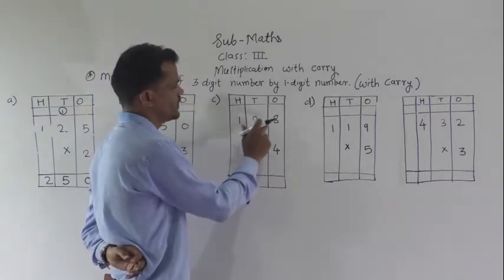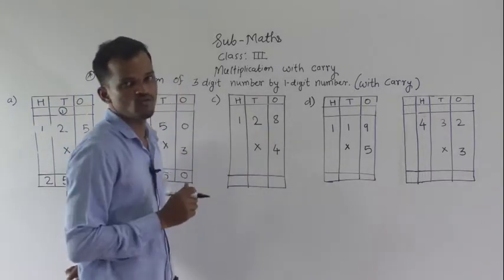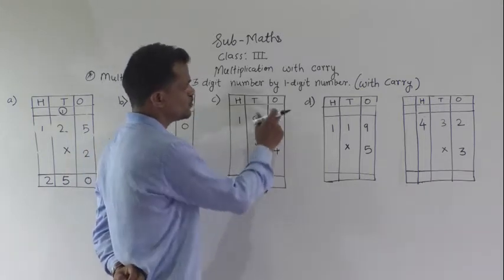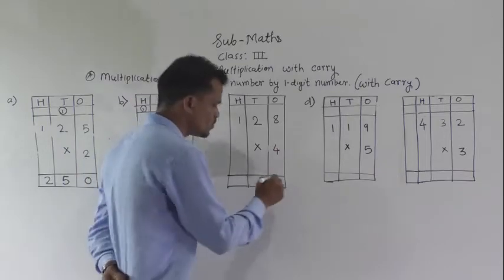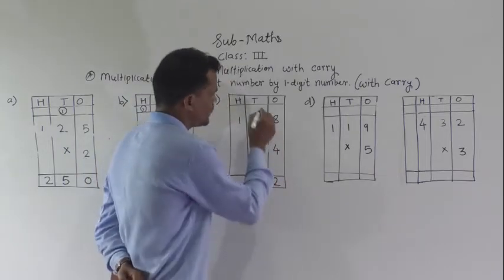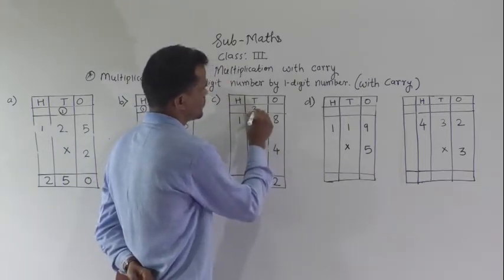Next example: 128 multiply by 4. First, recite the table of 4 up to 8. 4 times 8 is 32. Write 2 here and 3 carry forward.